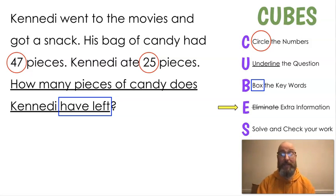Last, or not last, but next, for E, we're going to eliminate extra information. Is there anything here that doesn't matter? We don't need to know that part. Does anybody see it? There is something in this one. It's Kennedy went to the movies and got a snack. We don't need to know that. That's not important. All we need to know is that she had 47 pieces of candy and she ate 25. Kennedy was hungry. That's all we need to know. And we need to know that we're subtracting. So, we're going to eliminate that. Now, we can solve our question.